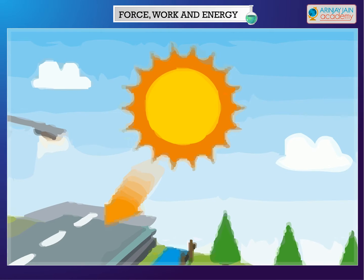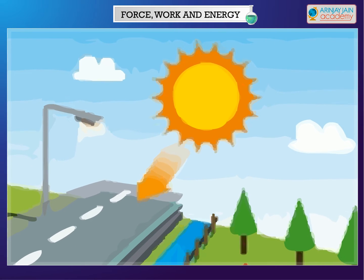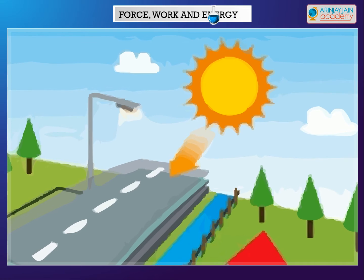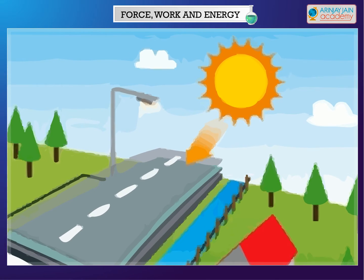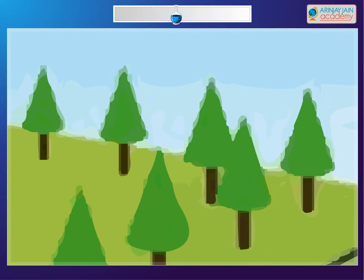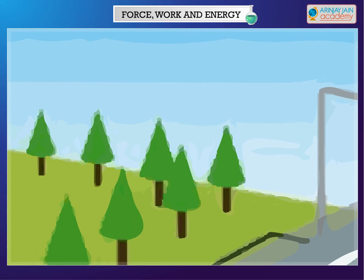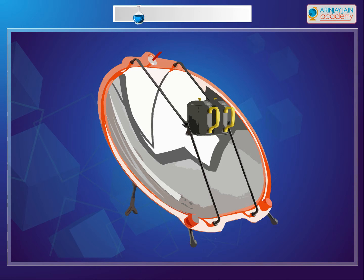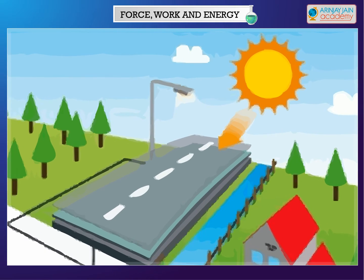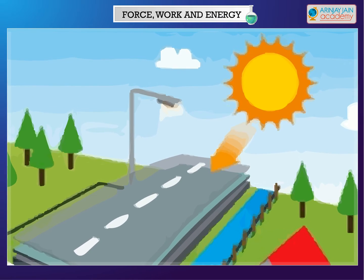Sun. The sun is the main source of energy on Earth. The energy that we get from the sun is called solar energy. Green plants use solar energy to make food. Solar cookers also use solar energy to cook food. We also get heat and light energy from the sun.